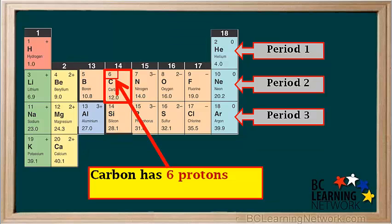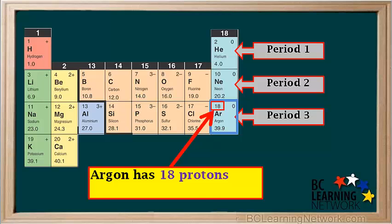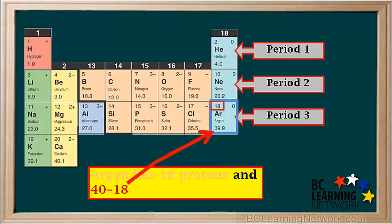To find the number of neutrons, we take the total number of protons and neutrons — which in carbon's case is 12 — and subtract the number of protons, which is 6. So 12 minus 6 gives us six neutrons. An atom of the most common form of carbon has six protons and six neutrons. For argon, which has 18 protons, 39.9 rounds to 40. So 40 minus 18 equals 22 neutrons. The most common isotope of argon has 18 protons and 22 neutrons.